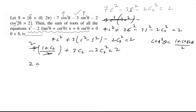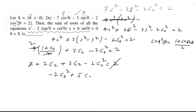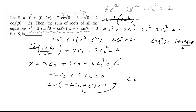Further simplify karne par: 2 + 2c2 + 3c2 - 2c2² = 2. Is 2 se yeh 2 cancel ho gaya, toh apne paas aa gaya: -2c2² + 5c2 = 0. Fir c2 common karein toh: c2(-2c2 + 5) = 0.